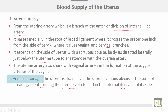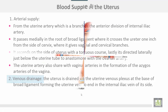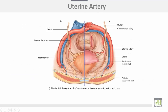Venous drainage of the uterus: the uterus is drained via the uterine venous plexus at the base of the broad ligament, forming the uterine vein which ends in the internal iliac vein.